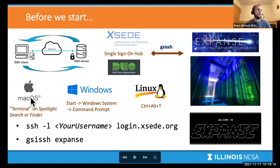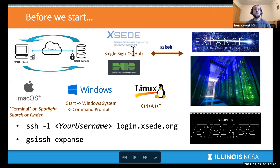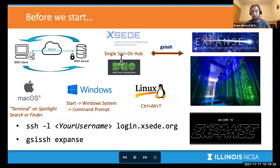If you're on a Mac, open your terminal. If you're on Windows, open your command prompt. If you're on Linux, also open your terminal. We're going to connect to the XSEED single sign-on hub. There's multi-factor authentication that will happen — it'll probably send a push to your phone or make a phone call. Then we'll finally connect to the cluster.